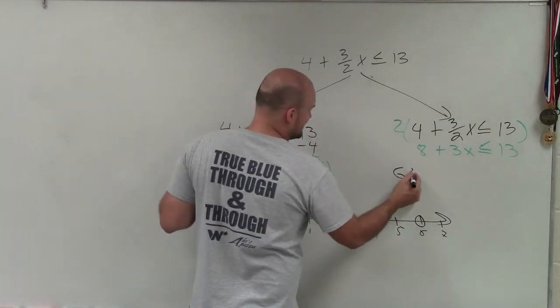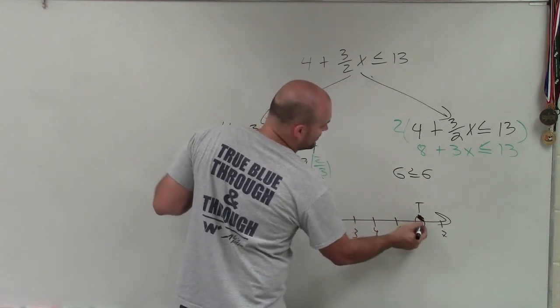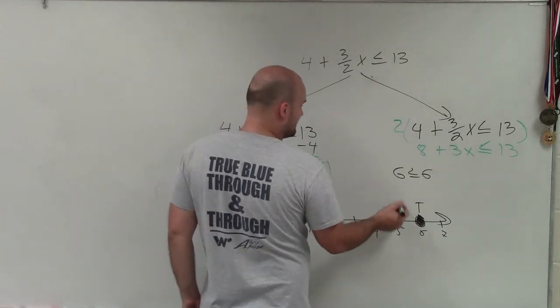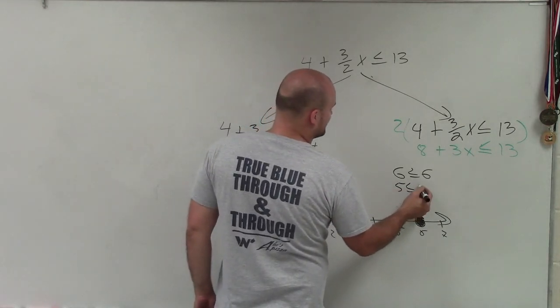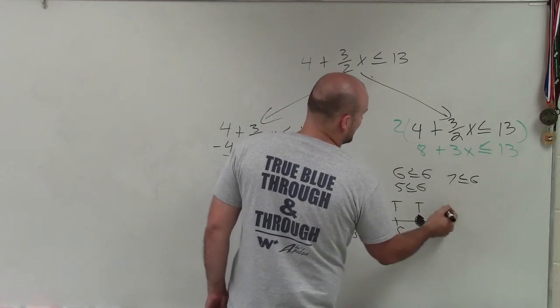And then we need to use our test points. So we test 6. Is 6 less than or equal to 6? Yes, that is true. So since it's true, 6 is part of our solution, so we fill it in. Then we pick points to the left and right. Is 5 less than or equal to 6? Yes, that's true. Is 7 less than or equal to 6? That is false.